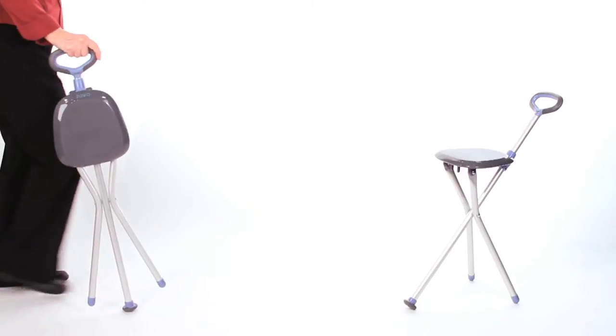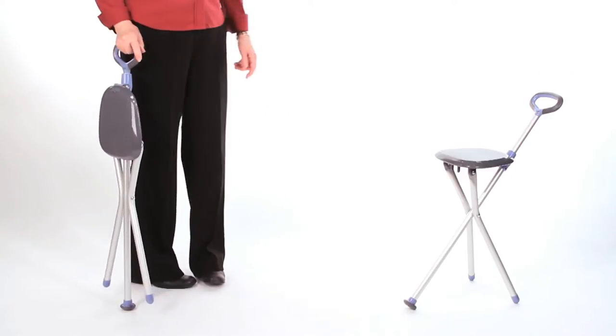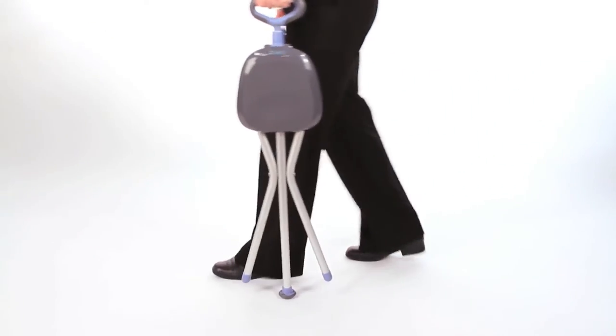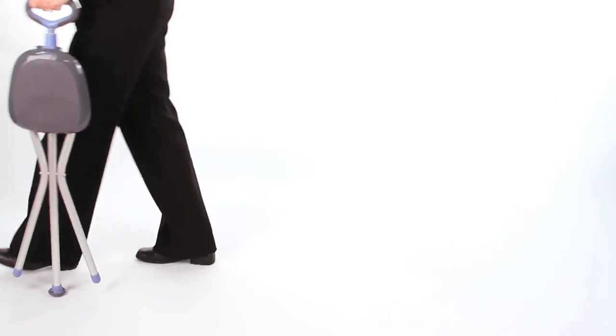The Juvo Travel Seat and Cane is a walking cane and seat in one. The cane is lightweight, contemporary in appearance, and has a soft rubberized comfort handle.